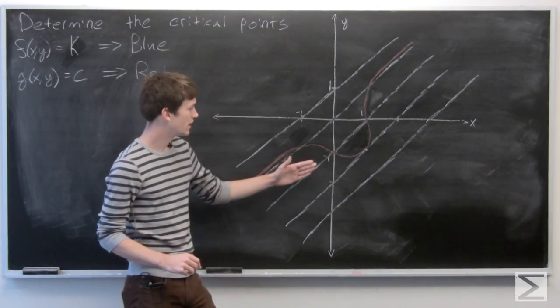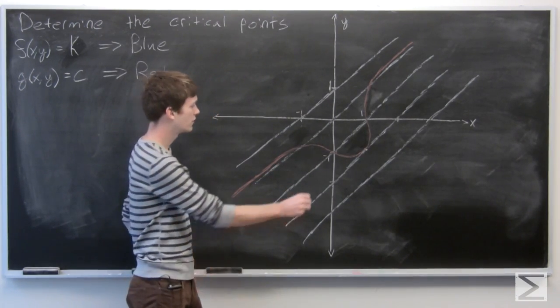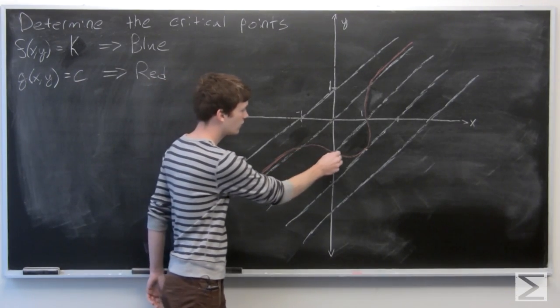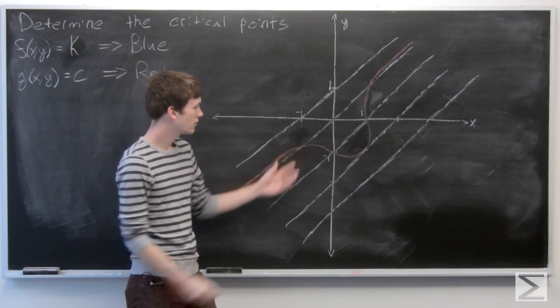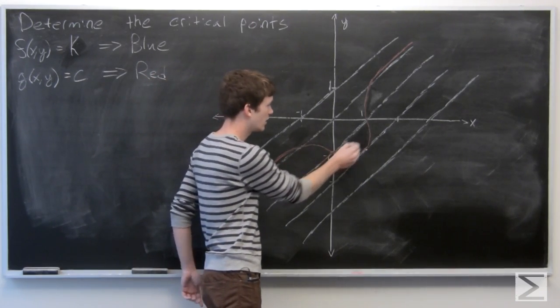So we see that we have values of f that are subject to our constraint at the points where they intersect.